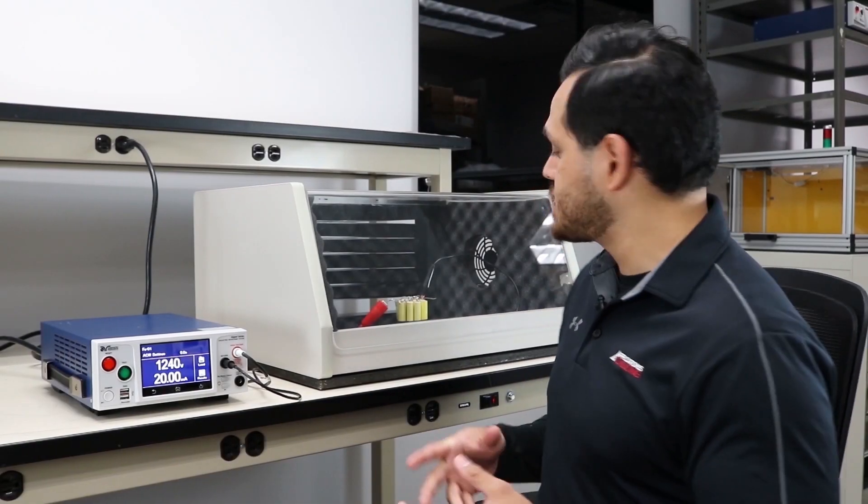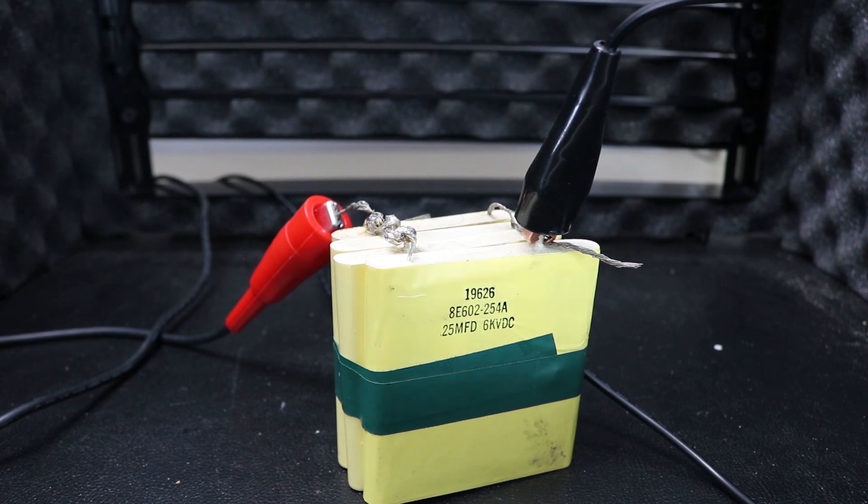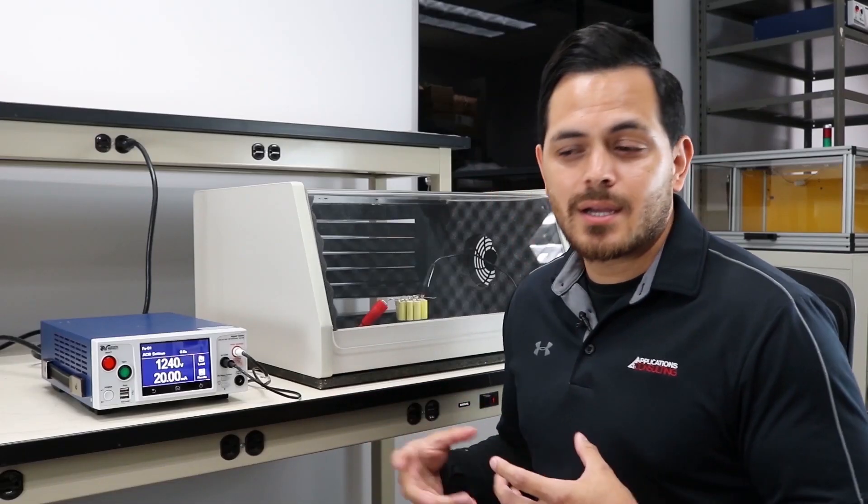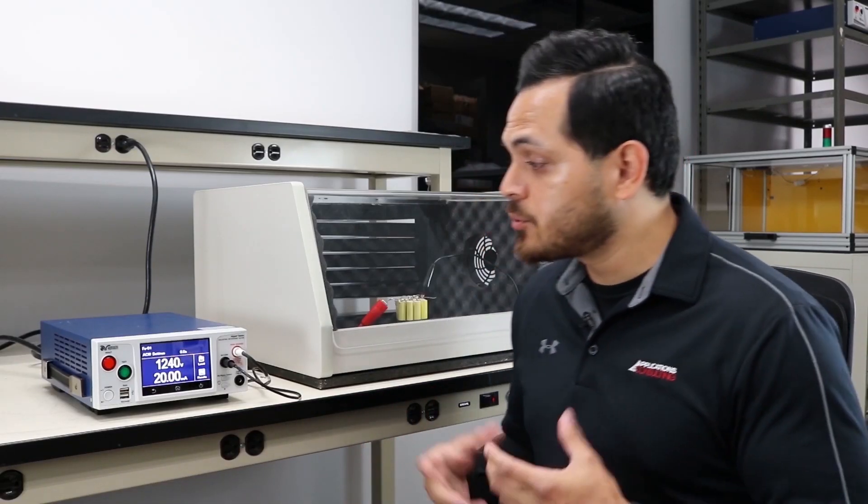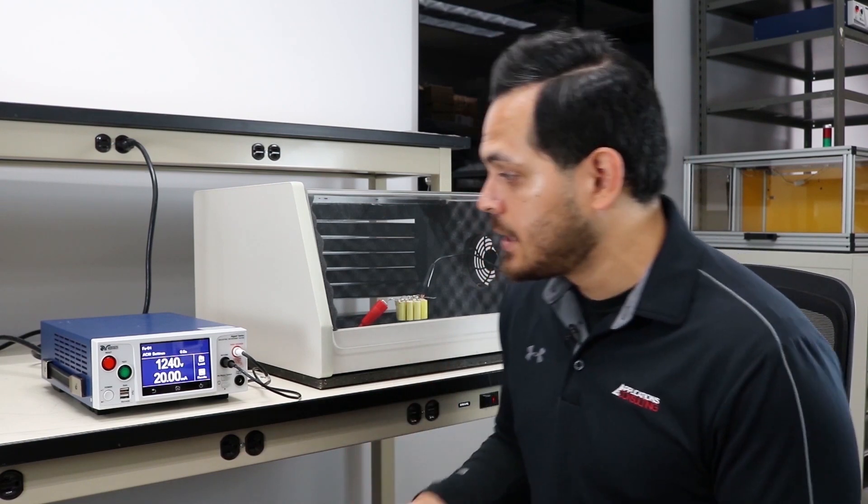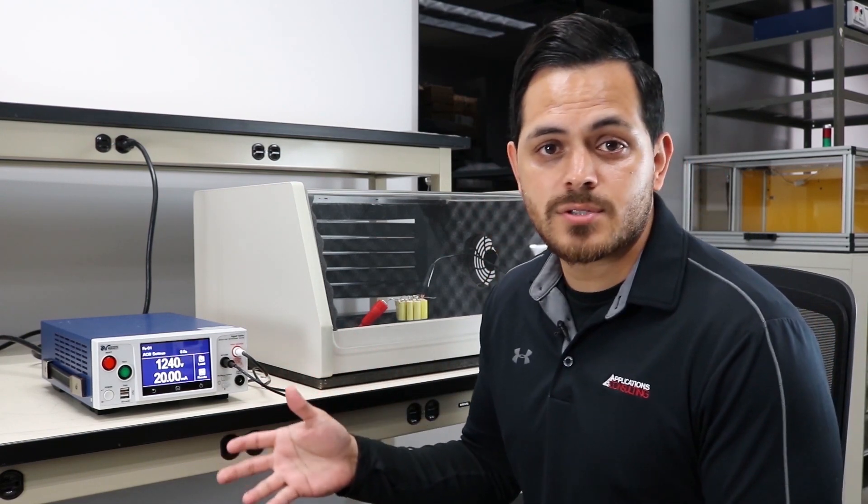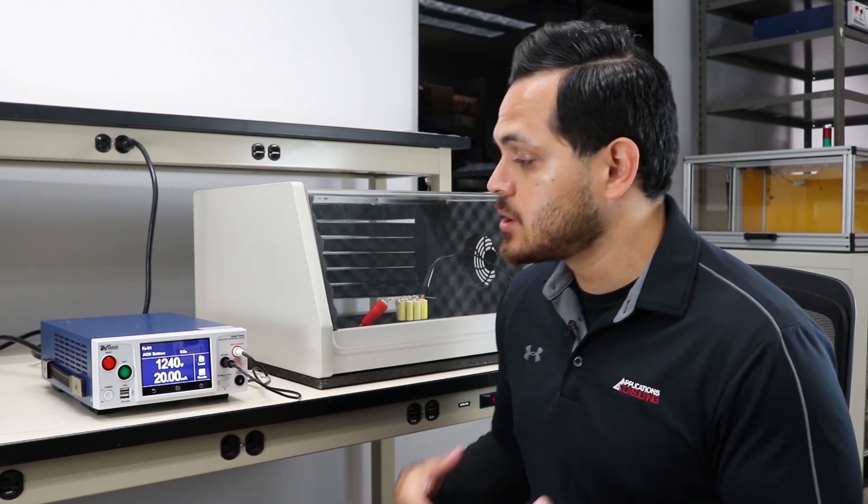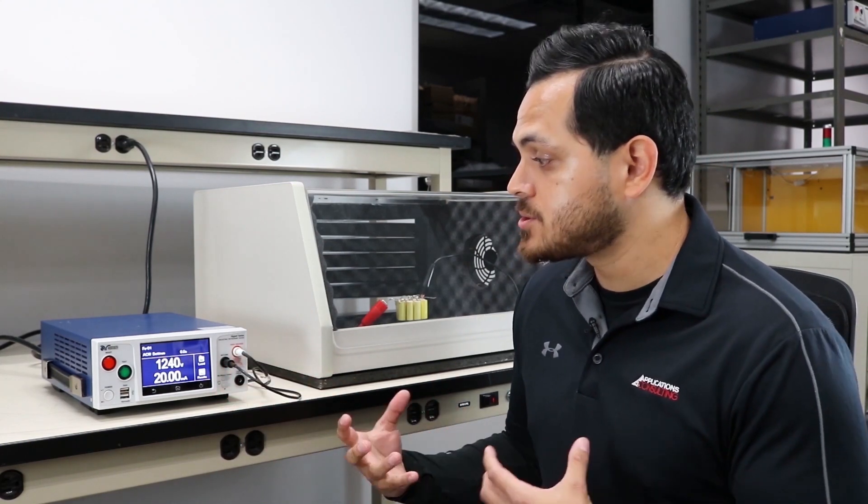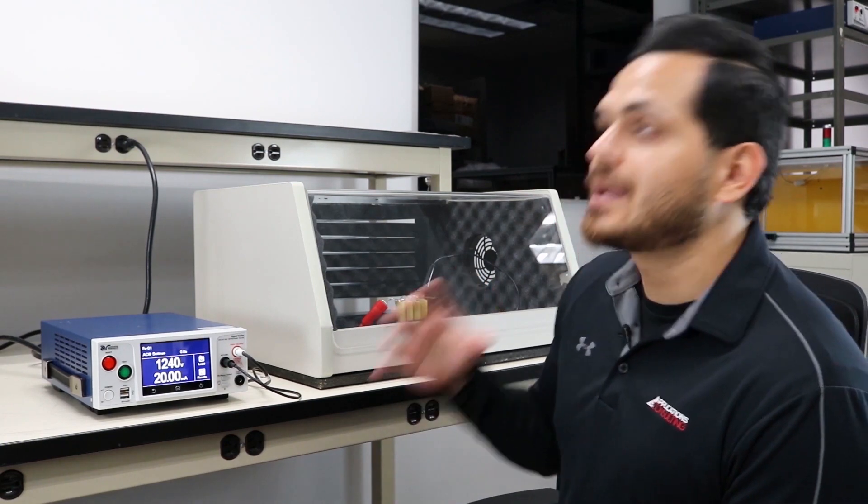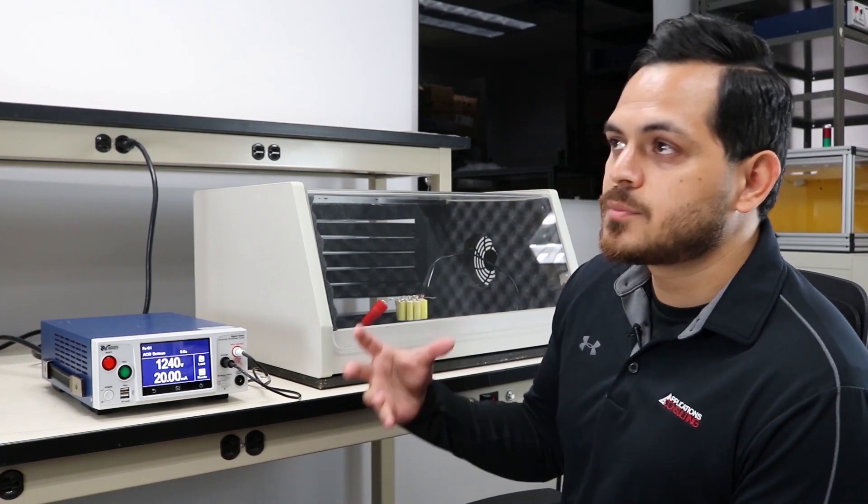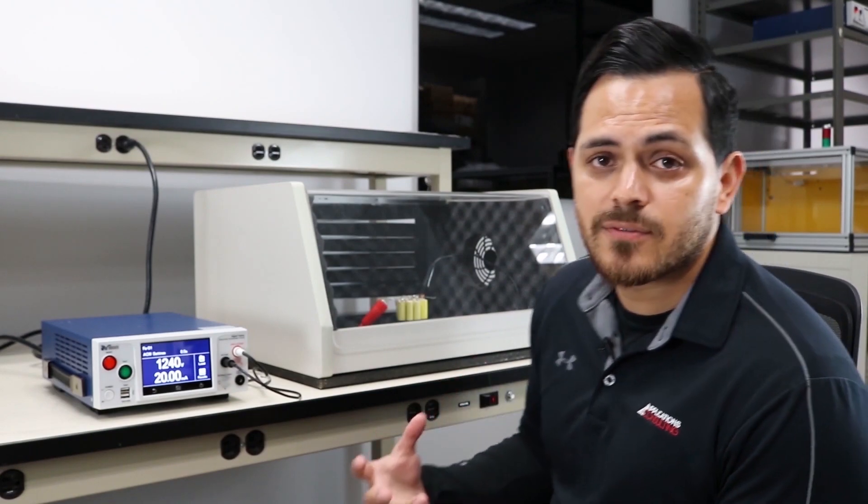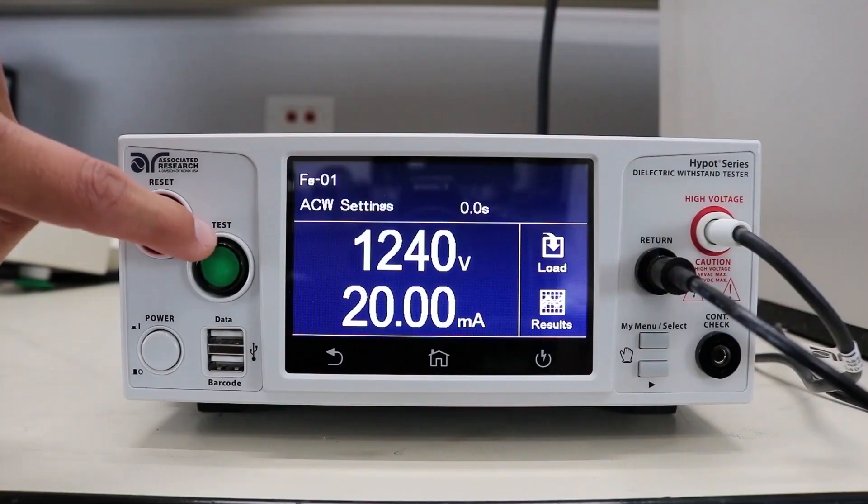All right, so as I said earlier, here we have some capacitors in parallel simulating a highly capacitive product. We're going to run a normal AC hypot test at 1240 volts - that's very standard. Our high limit is at 20 milliamps, that's the most our tester can output. Again, this is simulating a customer's highly capacitive motor or a thousand feet of cable spooled together. We'll run this test.